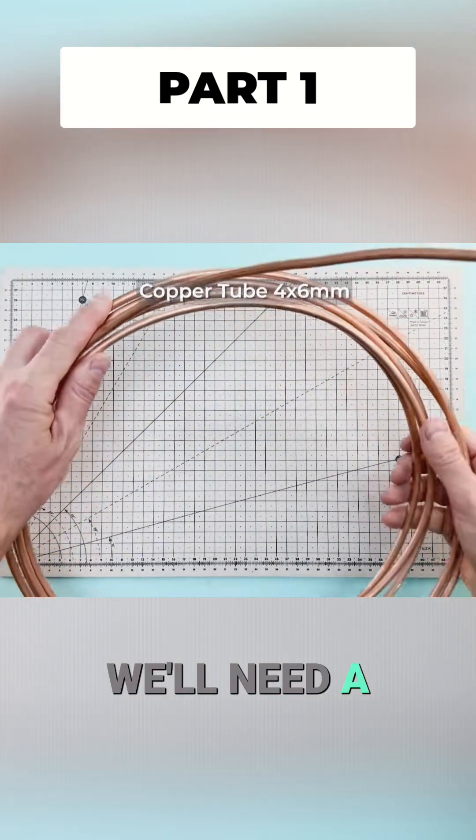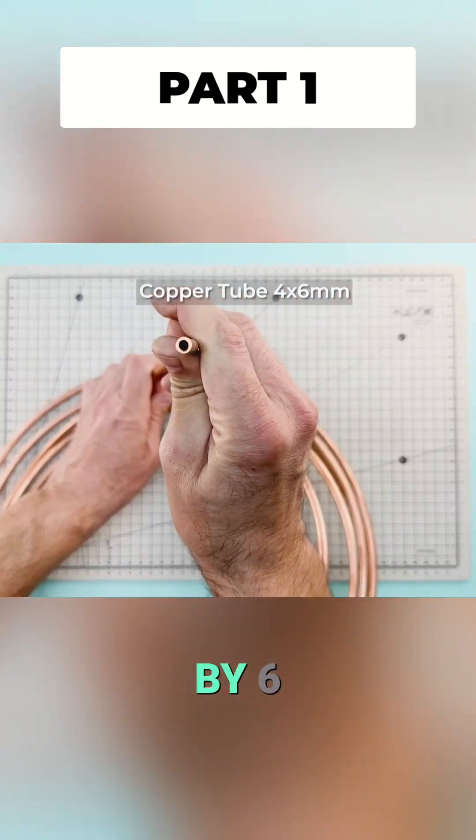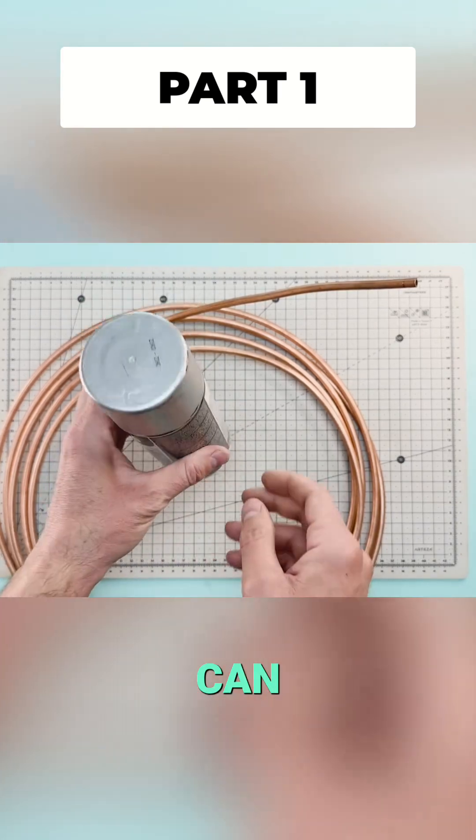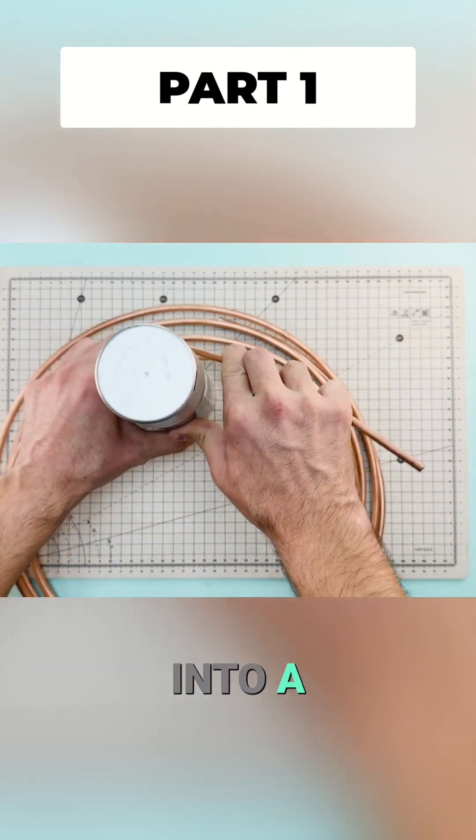To begin we'll need a copper tube with a four by six millimeter diameter. Using something round like this paint can, we'll bend the copper into a spiral.